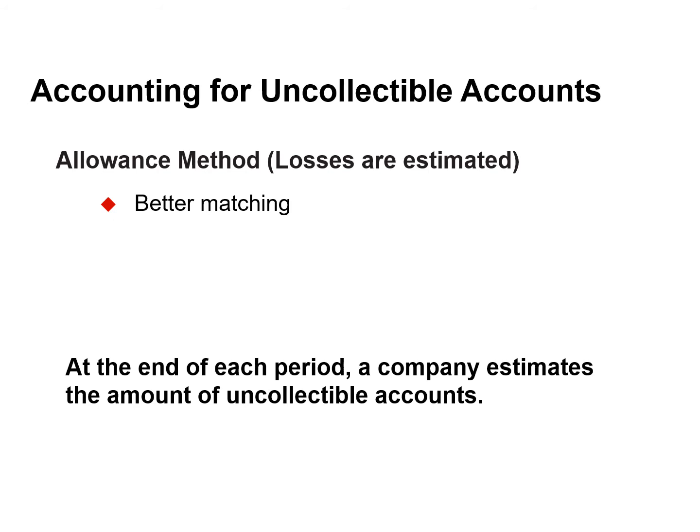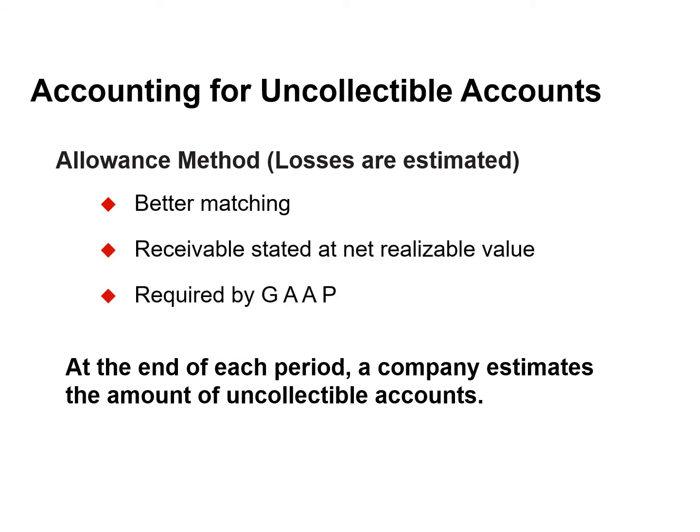The allowance method of accounting for bad debts involves estimating uncollectible accounts at the end of each period. It is based on the matching principle, so we record bad debt expense in the same period as the credit sale. This method also ensures that receivables are stated at their net realizable value, which is the amount a company expects to receive in cash. It excludes amounts that the company estimates it will not collect.